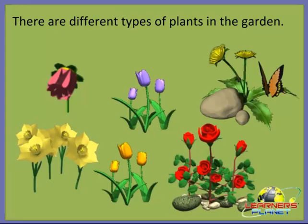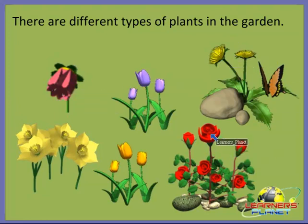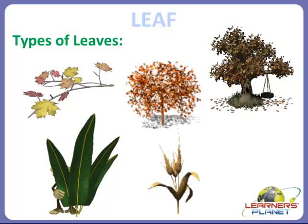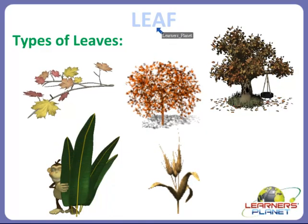We can see different types of plants in the garden. Children, all are not green in color — some are very colorful, like they have purple color, pink color, yellow color, red color. So we see different types of plants in the garden. Now we will study about leaf.